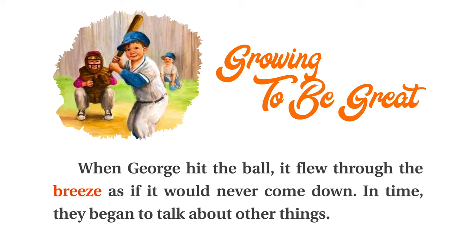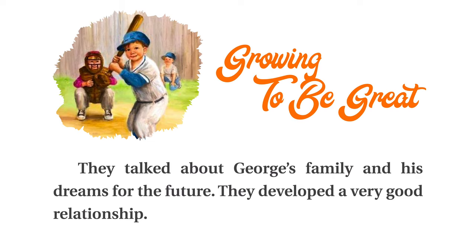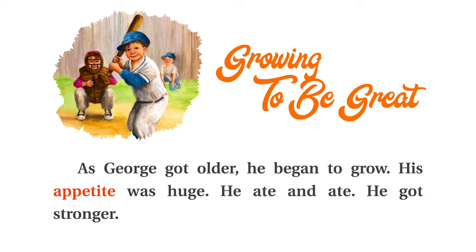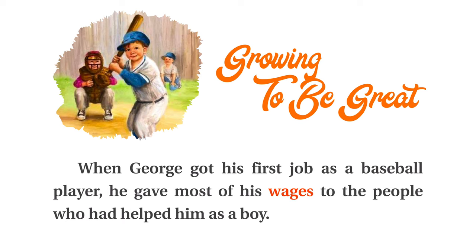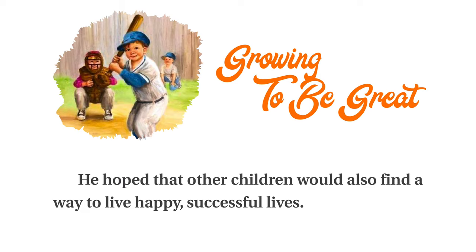When George hit the ball, it flew through the breeze as if it would never come down. In time, they began to talk about other things. They talked about George's family and his dreams for the future. They developed a very good relationship. As George got older, he began to grow. His appetite was huge. He ate and ate. He got stronger. Soon the other boys and even the teachers looked small and feeble next to him. Everyone thought that this heralded the start of a great baseball career. When George got his first job as a baseball player, he gave most of his wages to the people who had helped him as a boy. He hoped that other children would also find a way to live happy, successful lives.